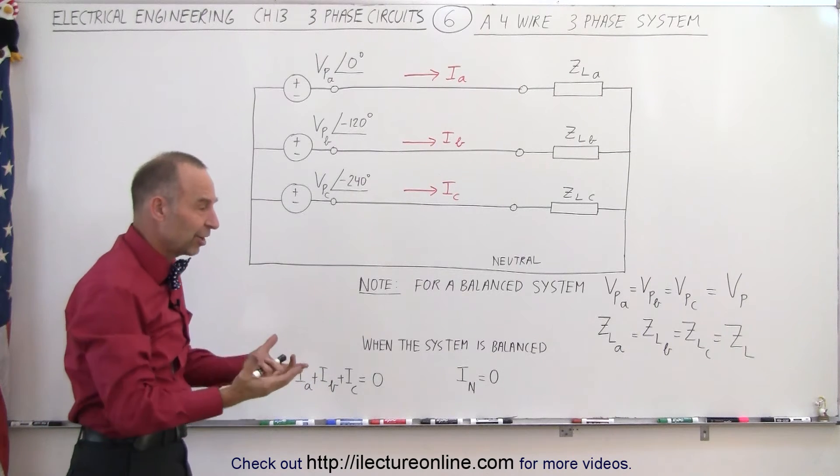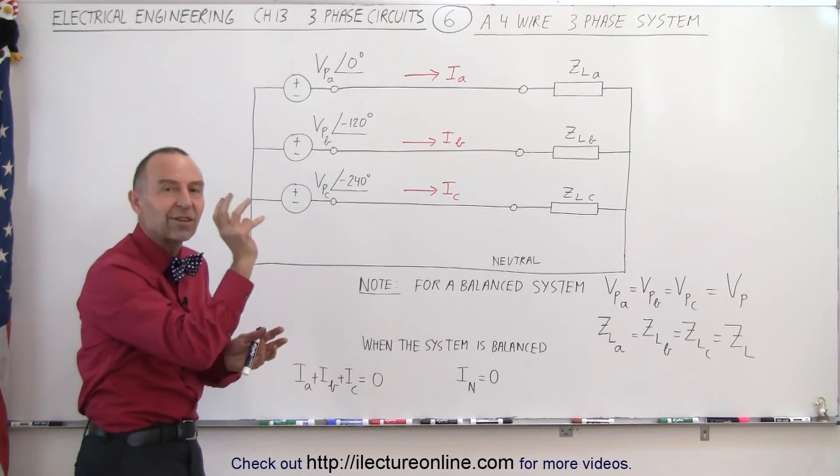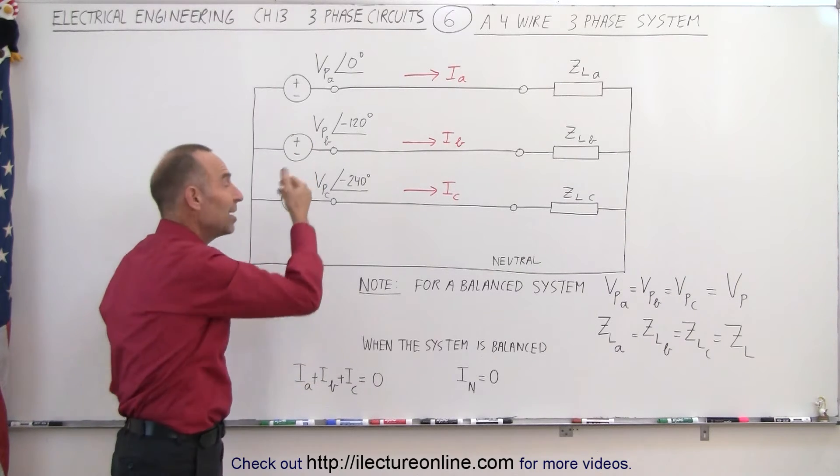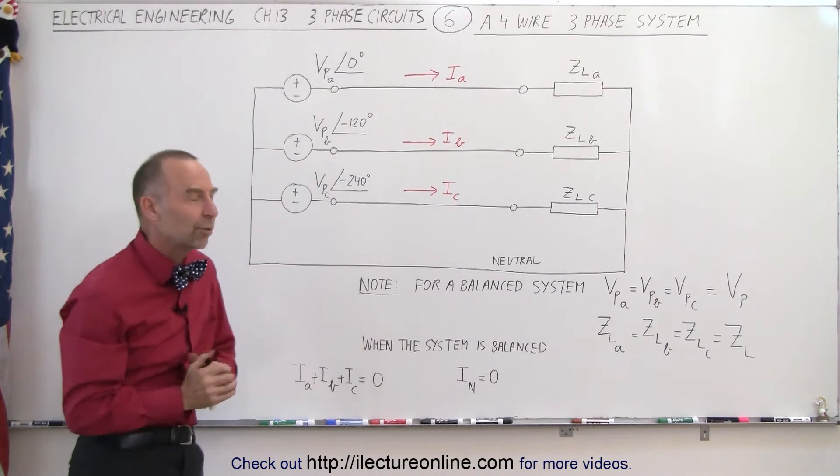Of course, when you make your generator and you put your coils at the exact location where they need to be, that then guarantees that they'll be exactly 120 degrees out of phase.